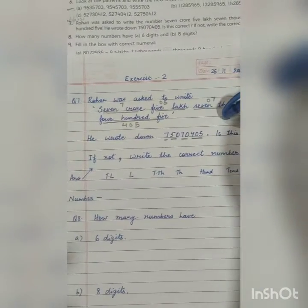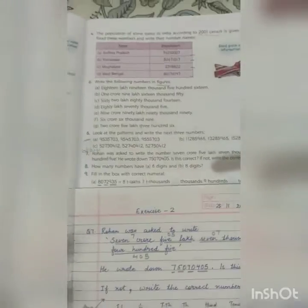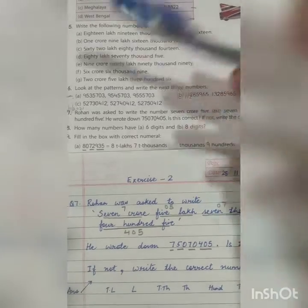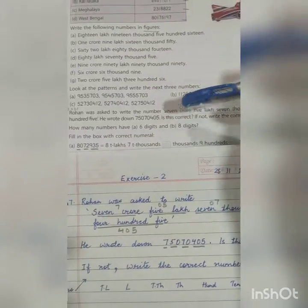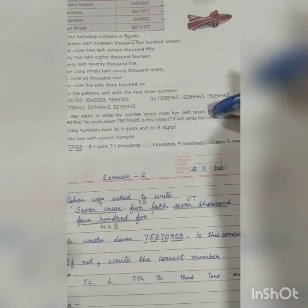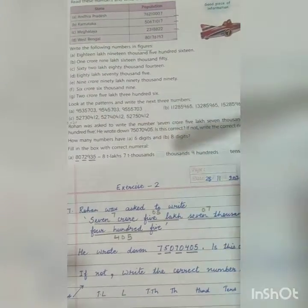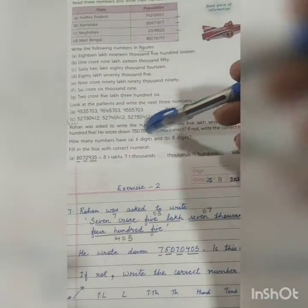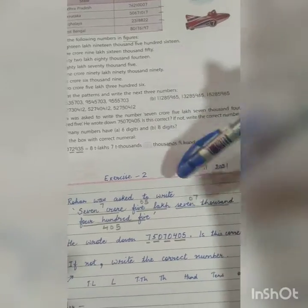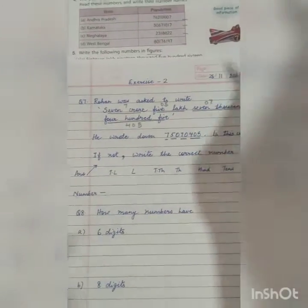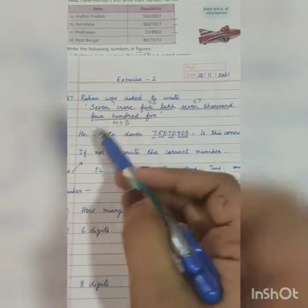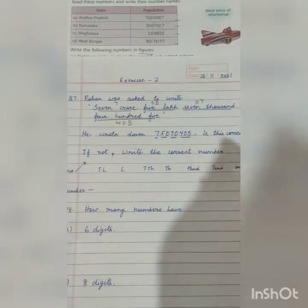Question number 7 we can't do in the book, we will copy. Question number 7 says Rohan was asked to write the number 7 crore 5 lakh 7 thousand 405. This number he wrote, so you have to check if it is correct. If not, write the correct number. Let's check our number 7 crore 5 lakh 7 thousand 405.